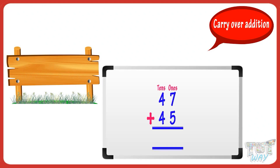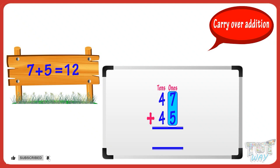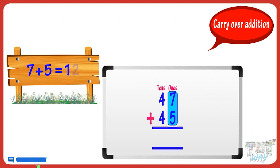First of all, we add the digits in the ones place. So add seven and five. Adding seven and five, we get twelve. Now how to write twelve — write the digit in the ones place, that is two.